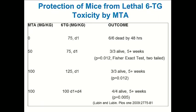Does it work? A study by Martin Lubin and his son done several years ago shows that by pretreating mice with methylthioadenosine — 50 or 100 milligrams per kilogram — one can protect mice from a lethal dose of 6-thioguanine. In the presence of MTA at 50 mg/kg, a lethal dose of 6-thioguanine is completely obviated, and even two doses of 6-thioguanine on days 1 and 4 can be protected with 100 mg/kg of methylthioadenosine. You can even protect from super-lethal doses of 6-thioguanine toxicity.